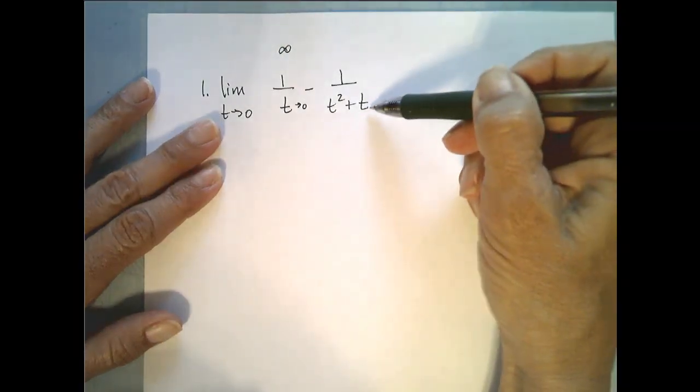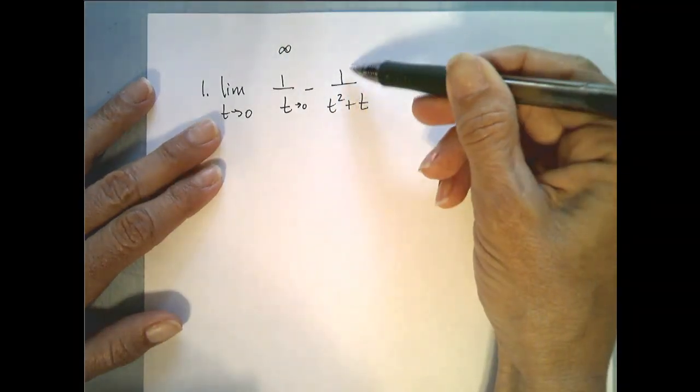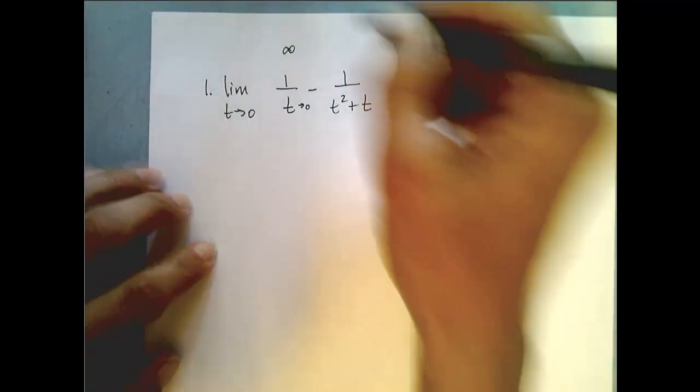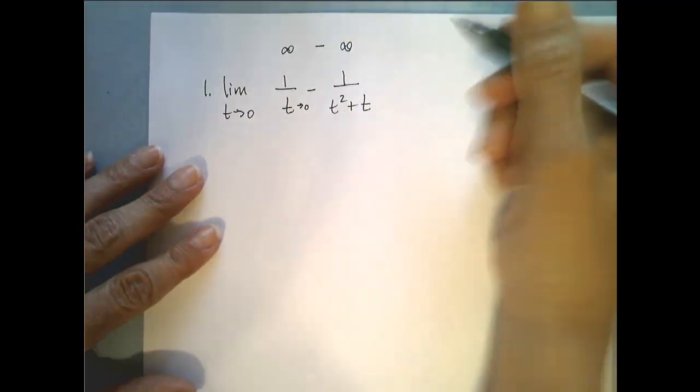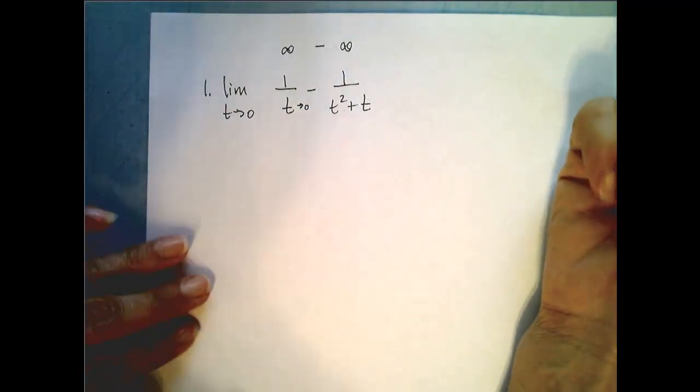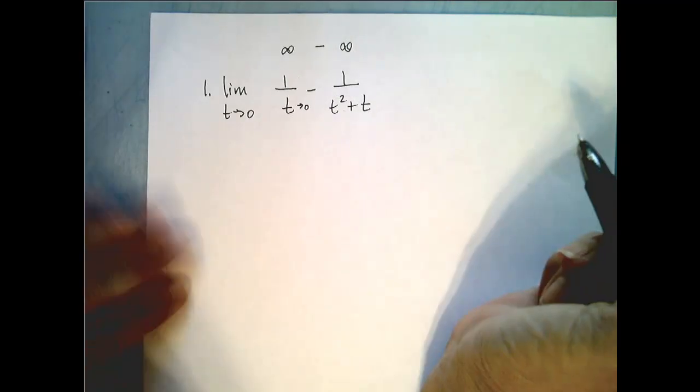Likewise if I plug in 0 over here I get the top goes to 1 and the bottom goes to 0, so we have another infinity situation and infinity minus infinity requires more investigation so direct substitution is not going to work.